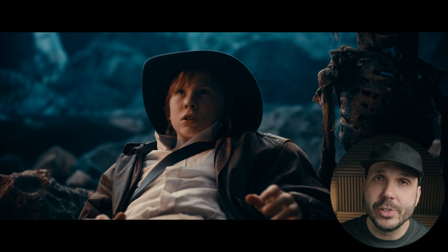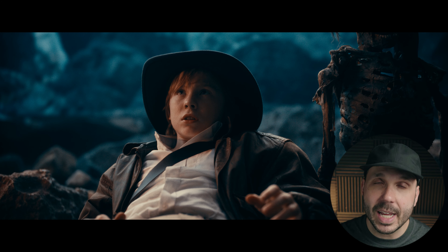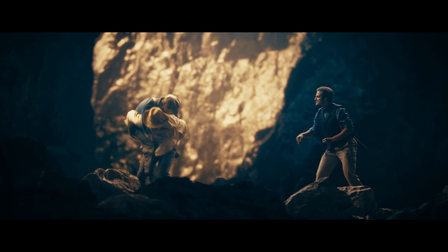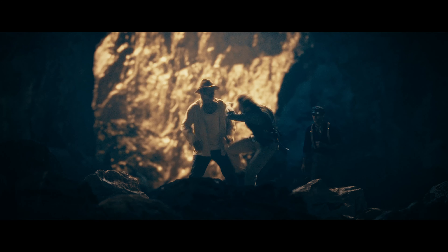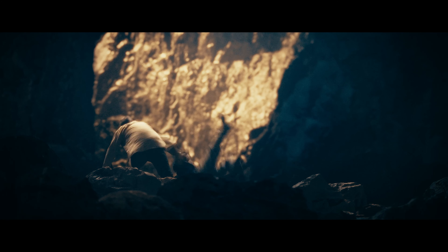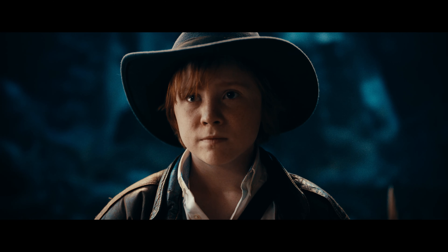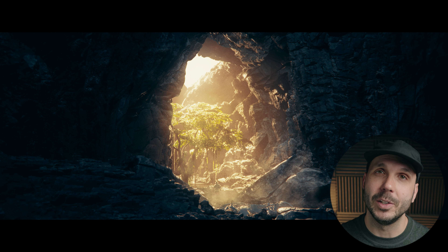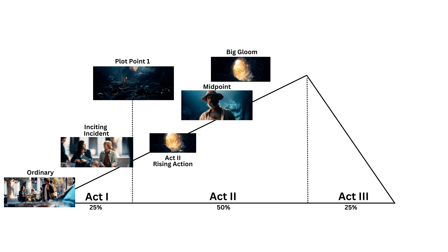The rising action we mentioned in Ingredient 4 should actually continue throughout all of Act 2, with the stakes continually being raised. And this brings us to Ingredient 6, which in screenwriting terms is known as the Big Gloom — the protagonist's lowest point. The idol is getting away and will be gone forever.